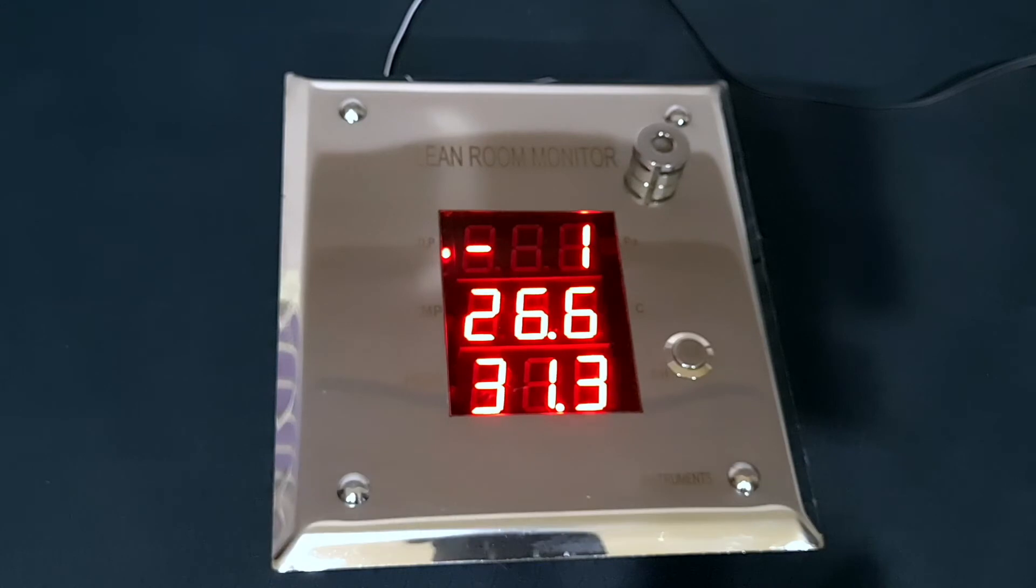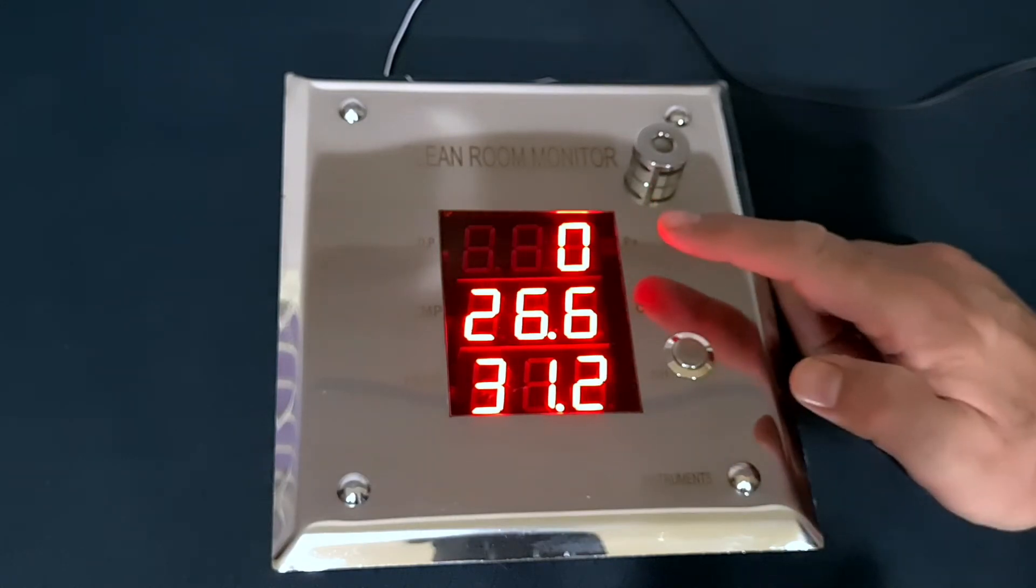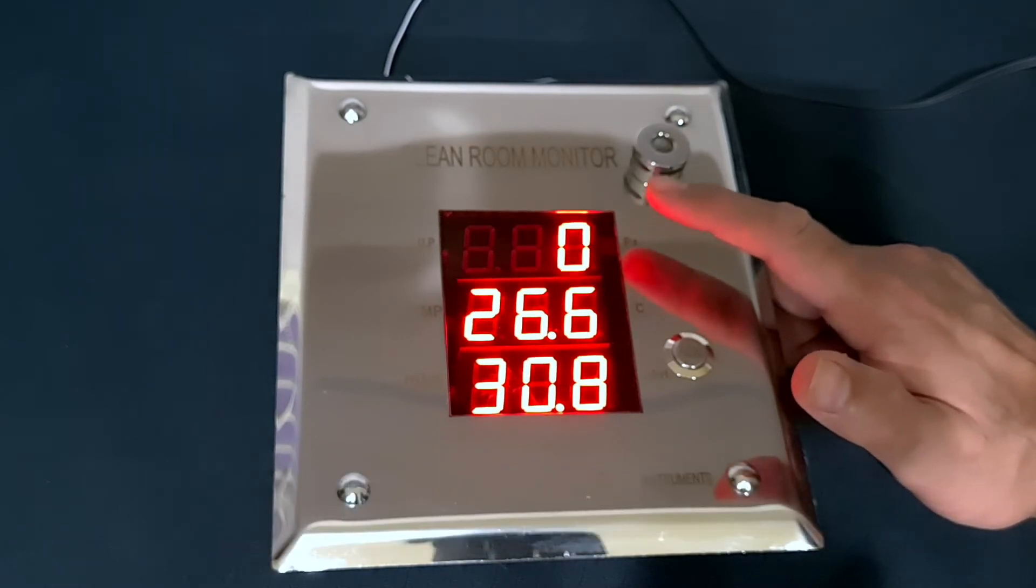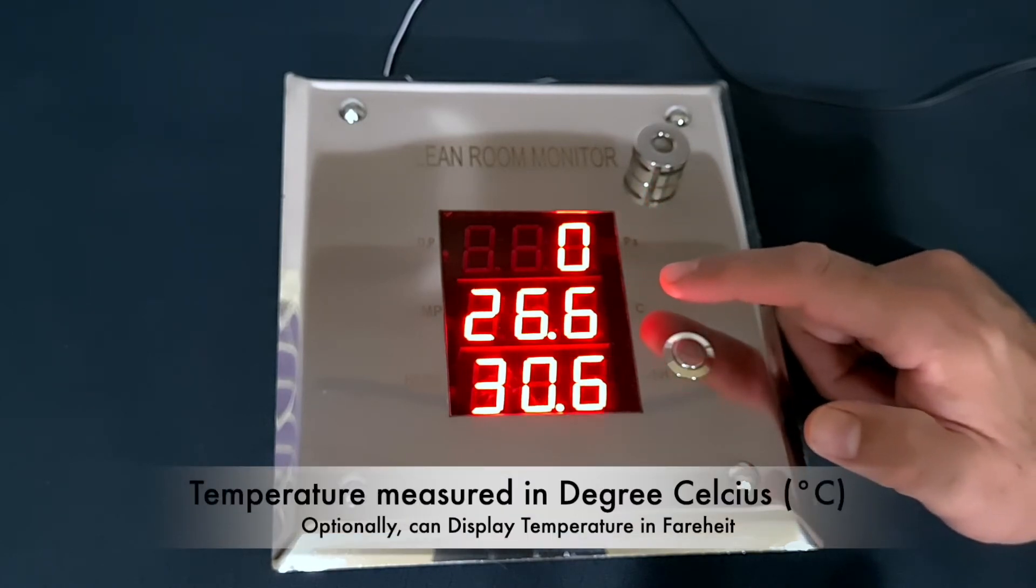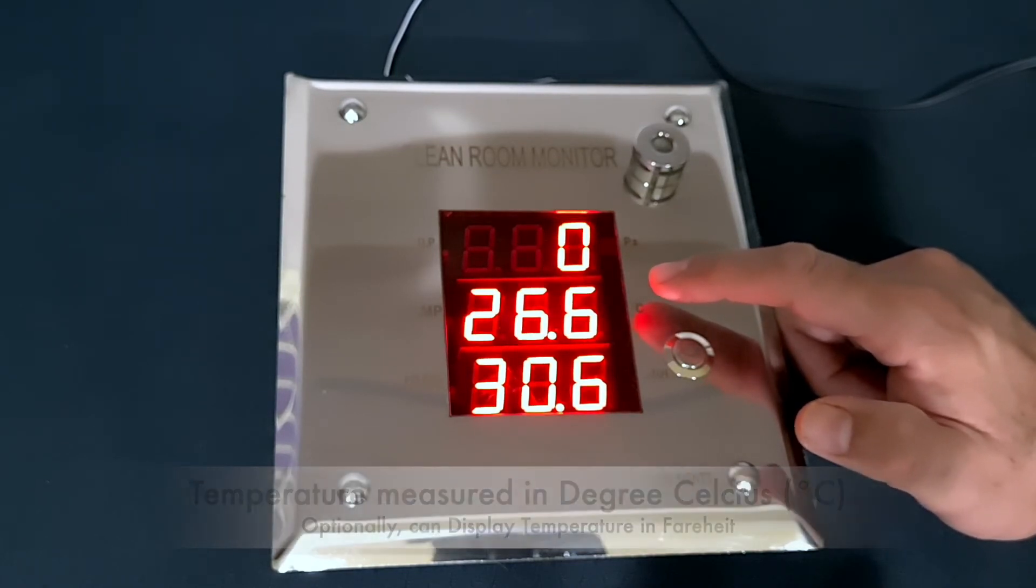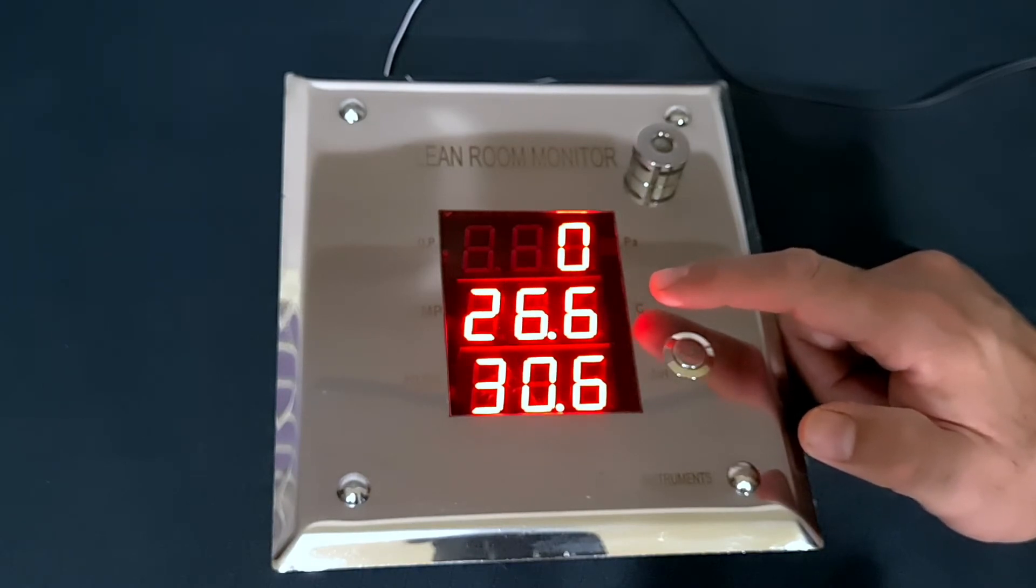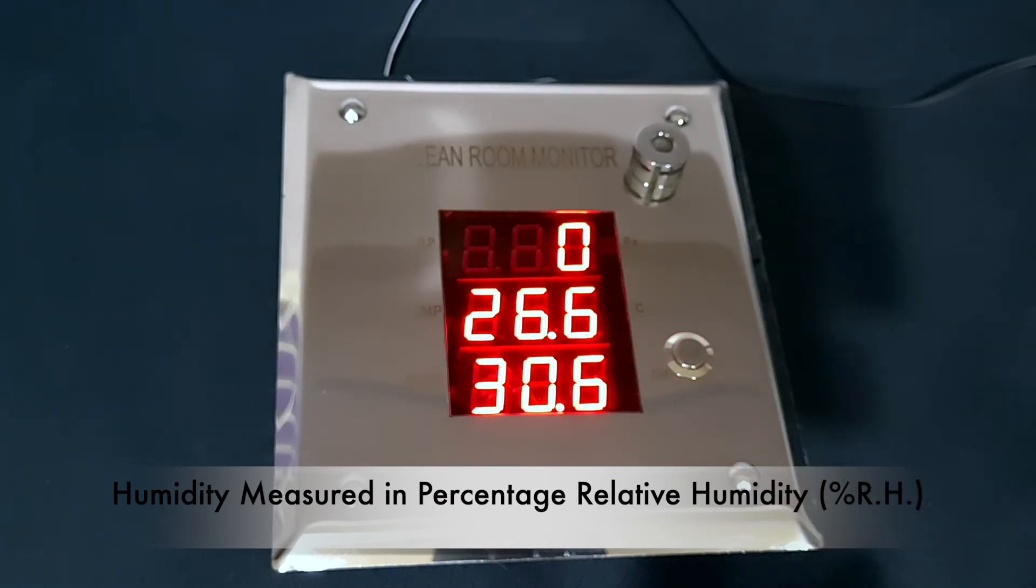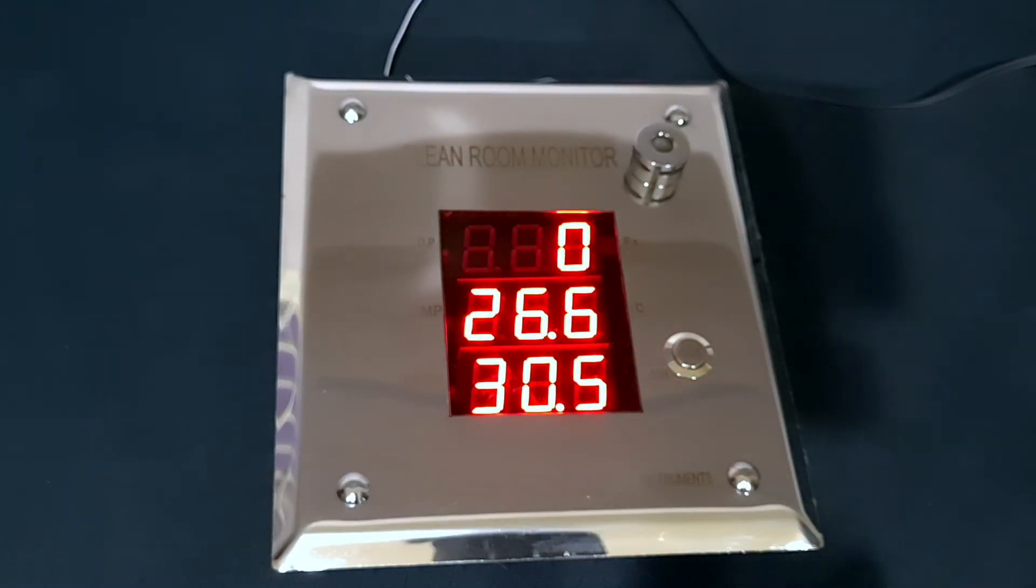It measures differential pressure in pascals as standard. Optionally, any other engineering unit like millimeters of water column or inches of water column can be accommodated. Temperature is measured in degrees Celsius as standard, optionally in degrees Fahrenheit. Humidity is measured in percentage relative humidity, that is percentage RH.